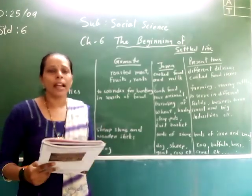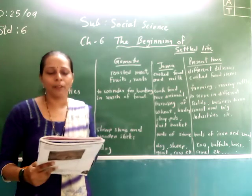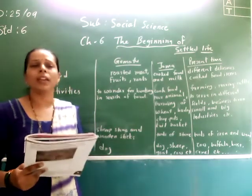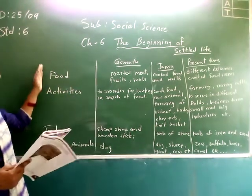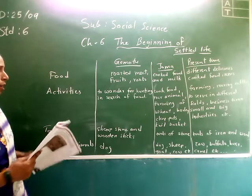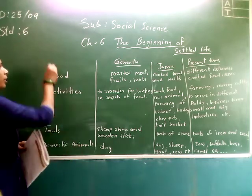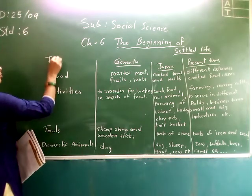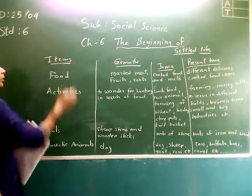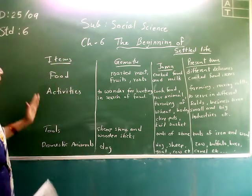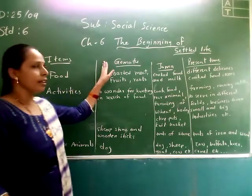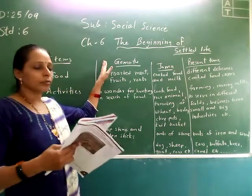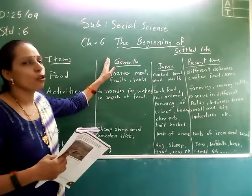The activity is given. Here is the required information in the table. In the table, there are items given: food, activities, tools, and domestic animals. And here, the time of Homo 2 is also included.